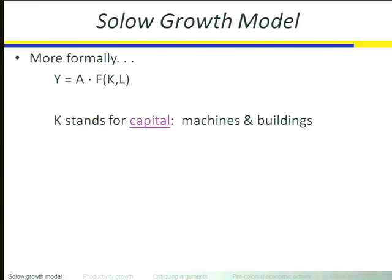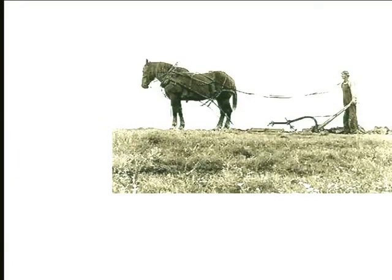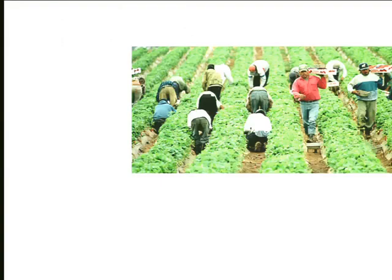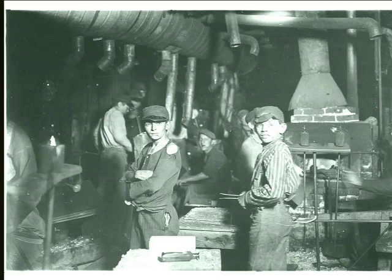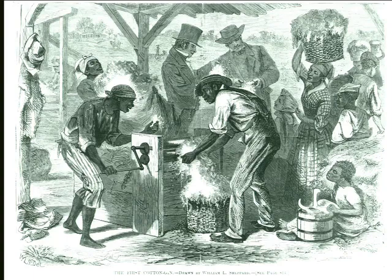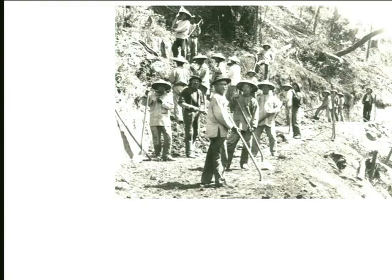L stands for labor — people, whether slave or free. The farmer here is labor; farm families, farm workers in the contemporary period, child laborers used in the 1800s, adult laborers — all part of labor. Slave labor is part of L. The Chinese workers who helped build the railroads — immigrant labor is part of labor. Labor includes not just people producing goods but also people producing services, such as health services or retail services.